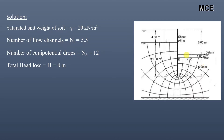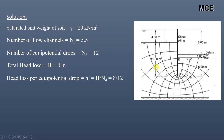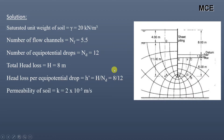The total head loss between upstream and downstream is 8 meters. We are taking the datum at the top of the downstream water level. The difference between upstream and downstream water level is 8 meters, so the head loss equals 8 meters. Head loss per equipotential drop equals H divided by Nd, which is 8 divided by 12.